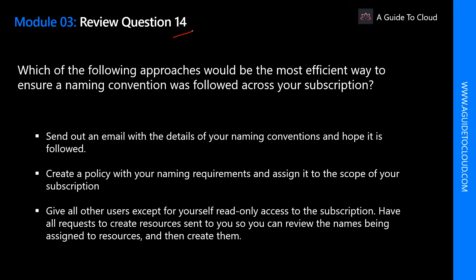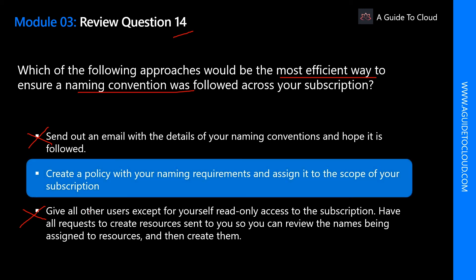Which of the following approaches would be the most efficient way to ensure a naming convention is followed across your subscription? The best way is by applying Azure Policy. Sending an email with naming convention details — that's a traditional way, not efficient. Giving all other users read-only access — that's a complicated process. The correct answer is: create a policy with your naming requirement and assign it to the scope of your subscription. Using Azure Policy ensures that you can not only recommend a naming standard but also report on its adoption.